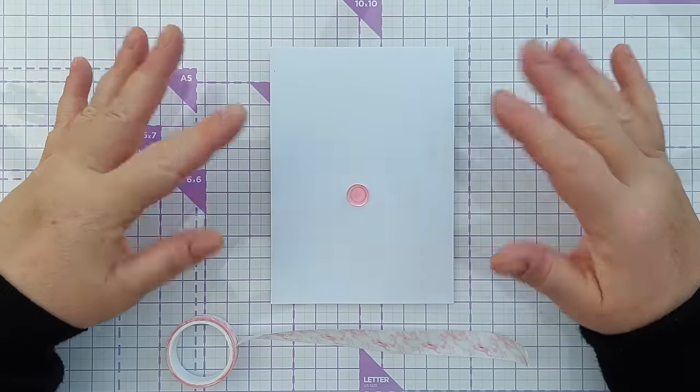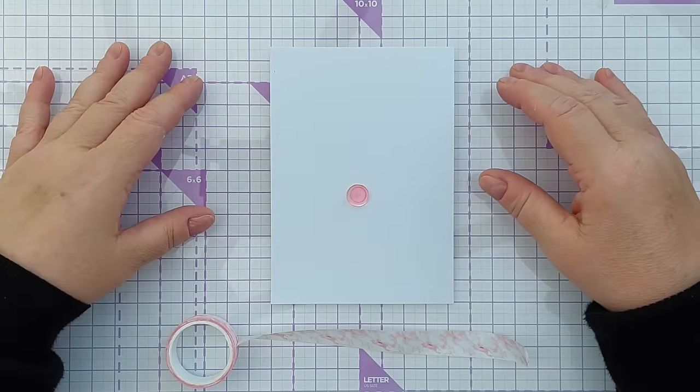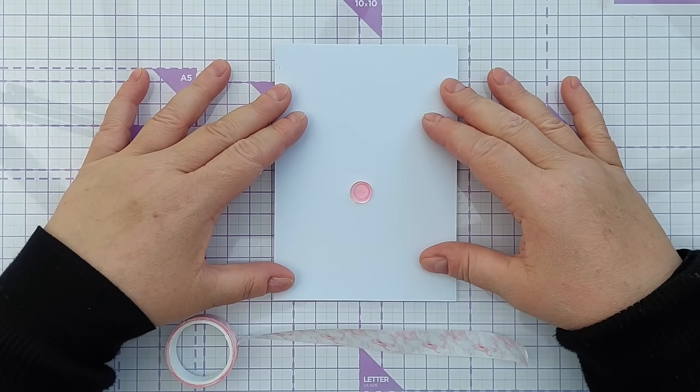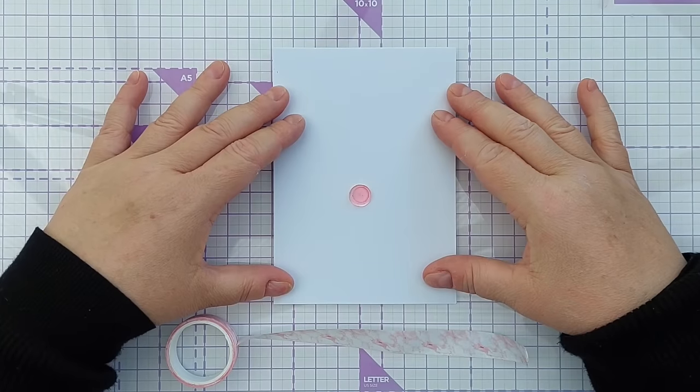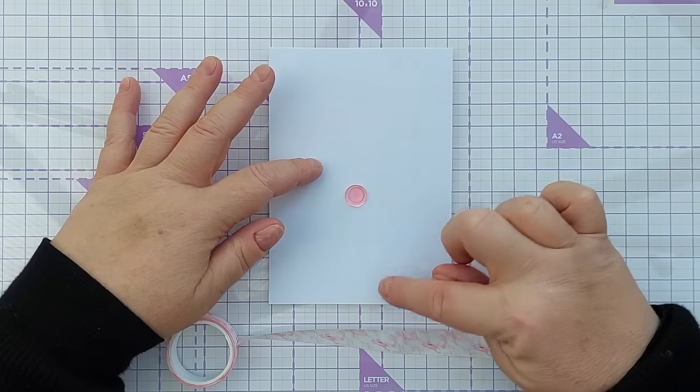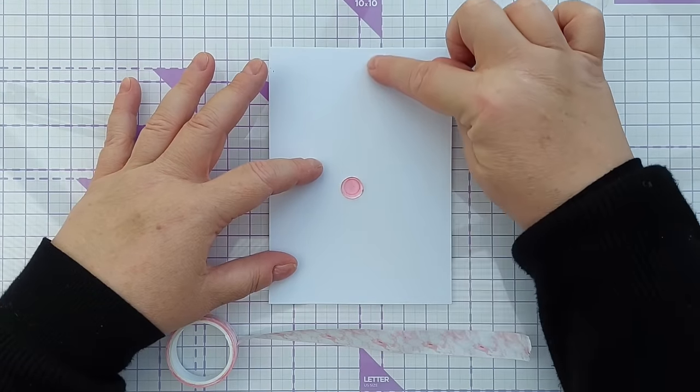So I've got here a card blank. I'm going to work directly on the card blank and I'm going to center it on my grid here, my glass mat grid, so that I've got a line that runs up the center.